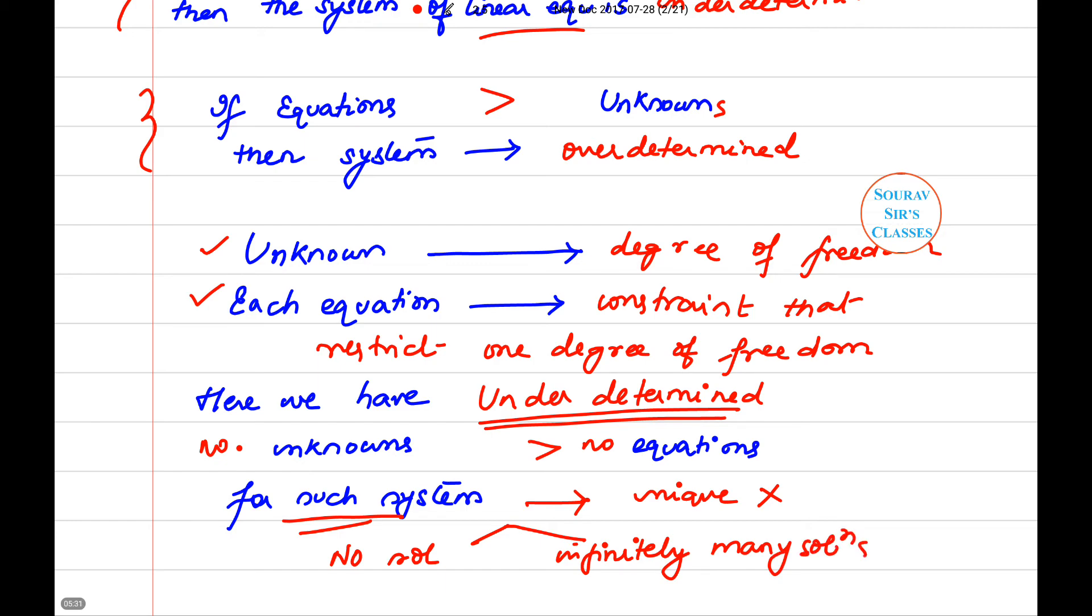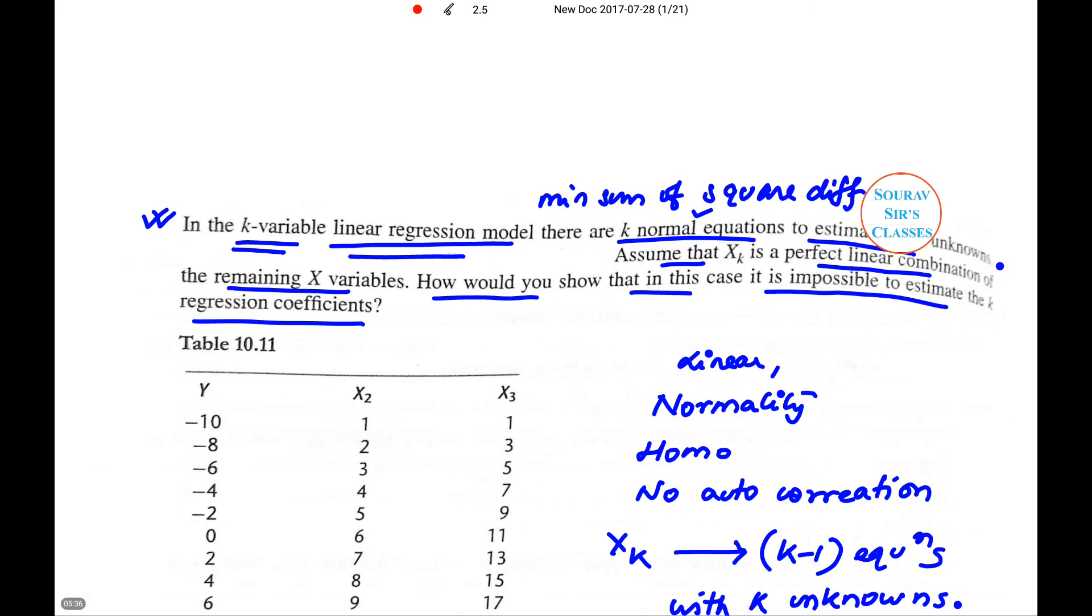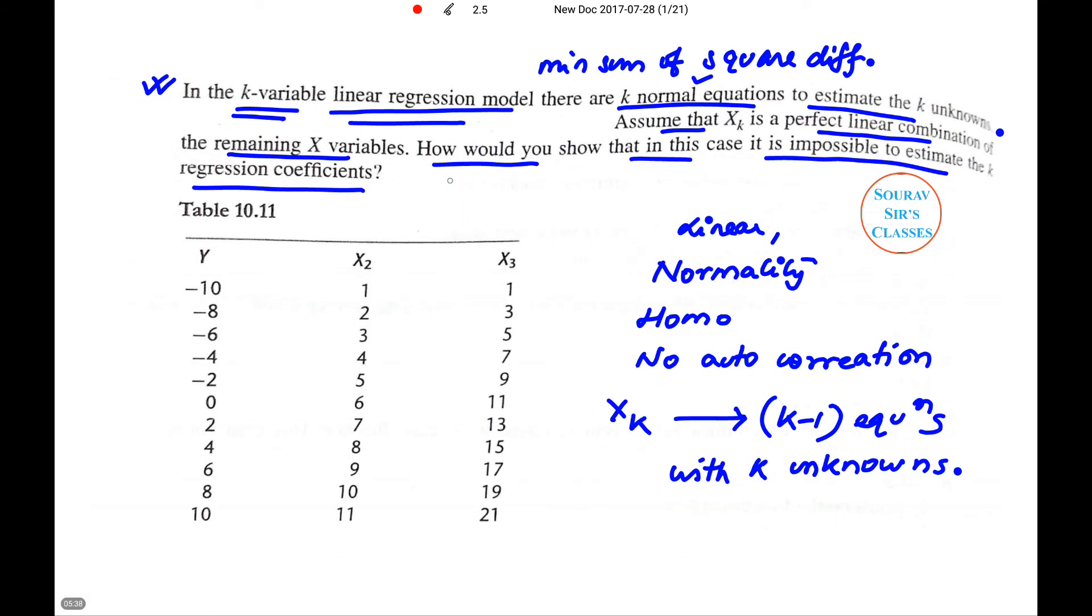So if we move back to the question - the question is how would you show that in this case it is impossible to estimate the k regression coefficients?